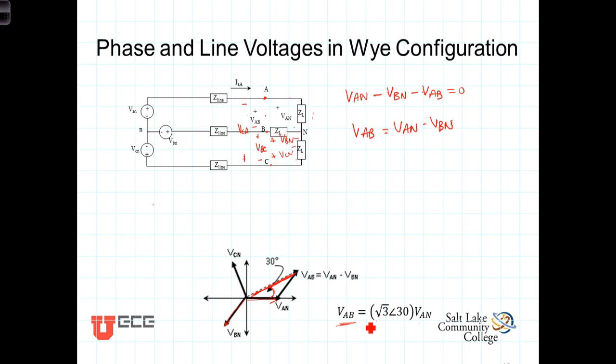In other words, VAB is square root of three times as long as VAN, and the angle of VAB is 30 degrees greater, in a more positive direction, than VAN. This is true for an ABC sequence.